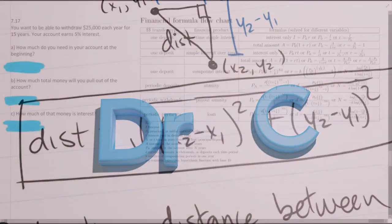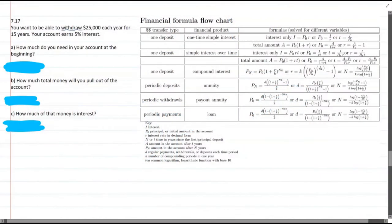This question, we want to withdraw $25,000 each year for 15 years, and the account earns 5% interest. So we can right away write down a bunch of these values. 5% is 0.05.